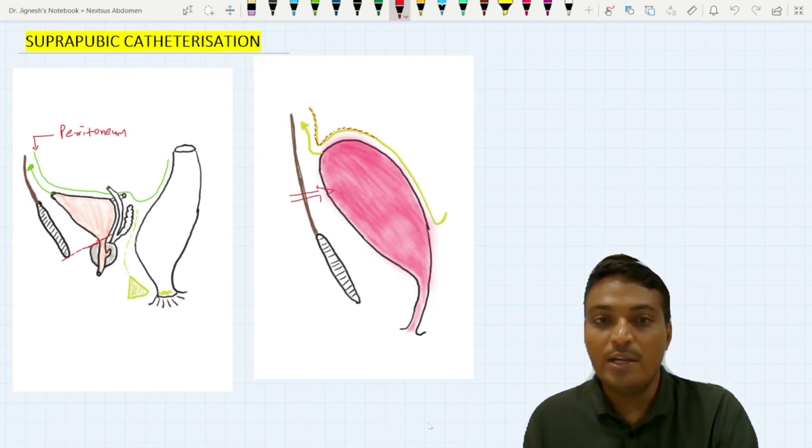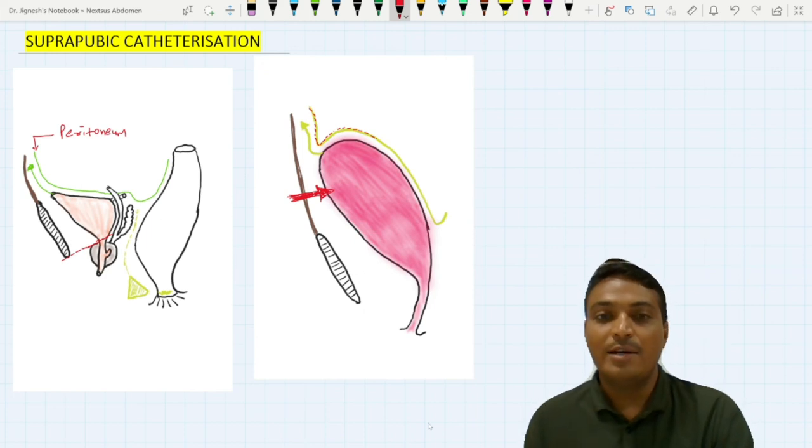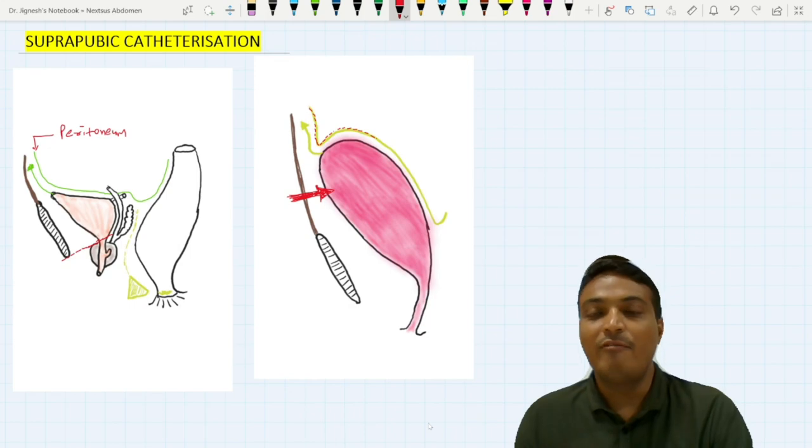This direct contact without intervening peritoneal fold is why suprapubic catheterization is an easy and feasible method at the time of emergency when traditional catheterization fails.